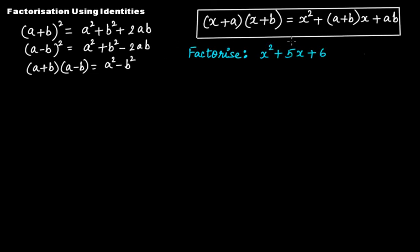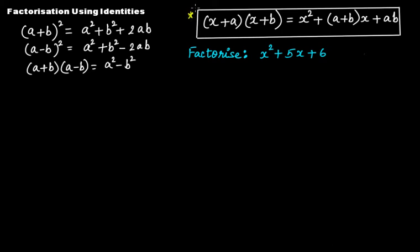For example, if you take this algebraic expression and try to factorize it using one of the three previous identities, you can't do it. Even if you try a squared plus b squared plus 2ab equals (a + b) whole squared, you cannot use it because it's x squared and there is no natural number a such that a squared equals 6. So in that case, you have to use this new identity.